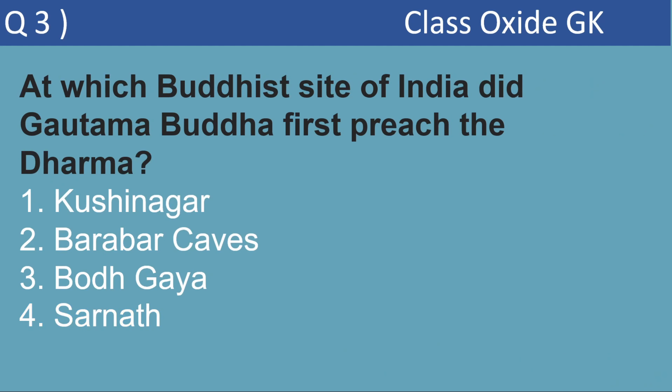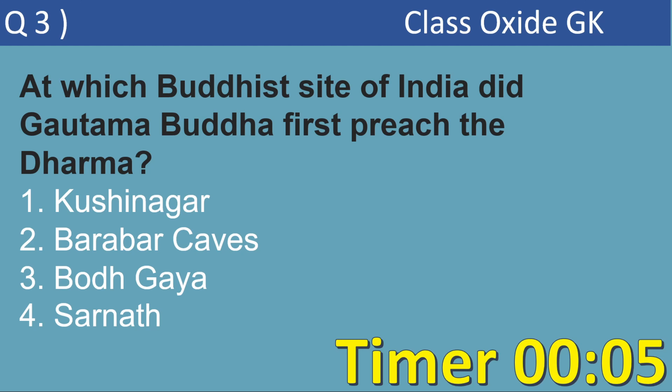Next MCQ. At which Buddhist site of India did Gautama Buddha first preach the Dharma? This is a very common question. Options are Kusinagar, Barbara Cave, Bodhgaya, Sarnath. This question has appeared many times in SSC and railway exams. The correct answer is option 4, Sarnath.